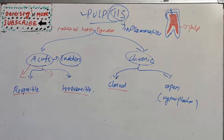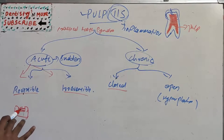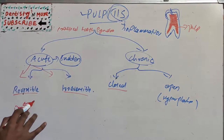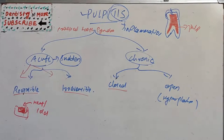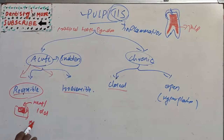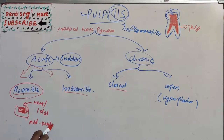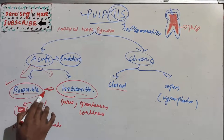The etiology of acute reversible pulpitis includes dental caries, cavity preparation, or thermal changes. For example, if we have a large metallic silver amalgam filling and thermal changes such as heat or cold elicit a response, it will mostly be a reversible pulpitis. The pain is always mild to moderate — we can withstand it; it is not very severe.